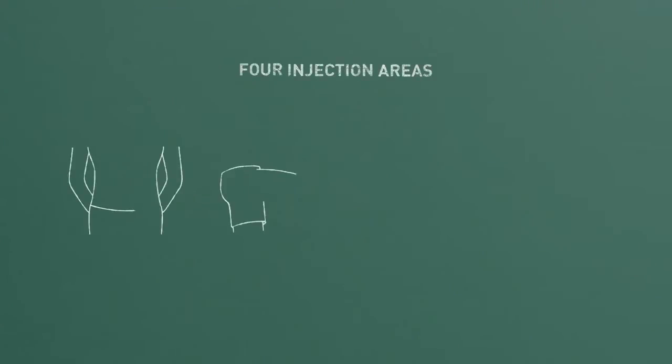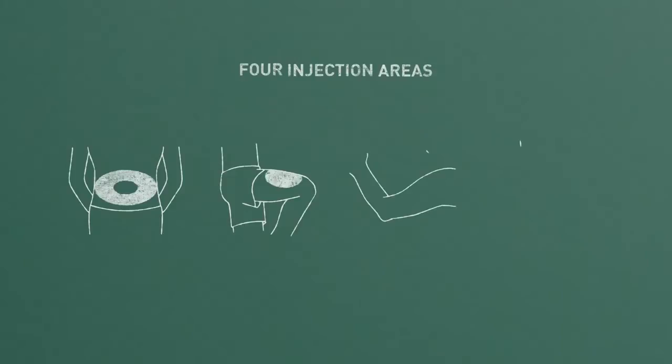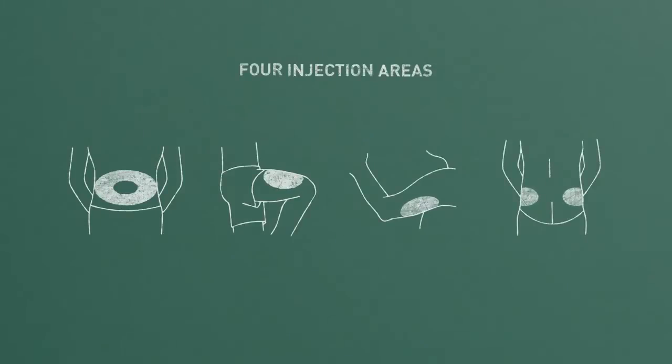There are four areas on your body where you can inject: your abdomen, your thighs, the outer parts of your arms, and your buttocks. Those are the best areas to inject because that's where you have the most subcutaneous fat. Injecting into the fatty layer of your skin is where insulin is most consistently absorbed.